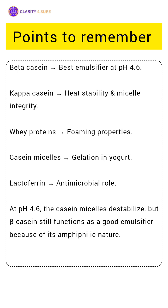Regarding gelation: at pH 4.6, casein micelles lose charge, aggregate, and form a gel network. Lactoferrin binds iron, making it unavailable to bacteria, providing natural defense and immunity in milk with antimicrobial activity.